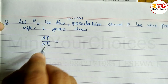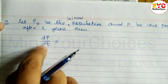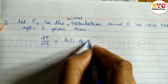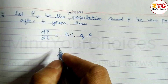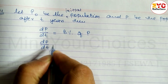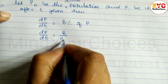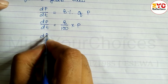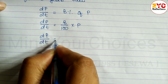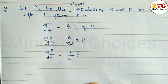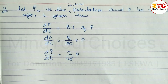Since the growth rate is 8% per year: dp/dt = (8/100)·p = (2/25)·p.